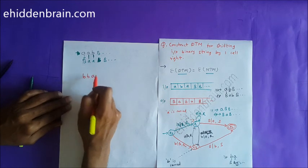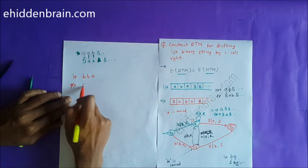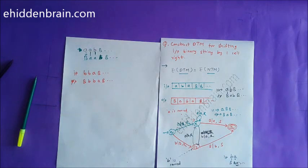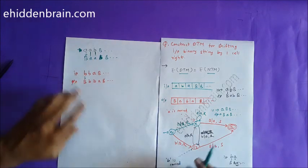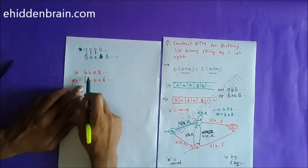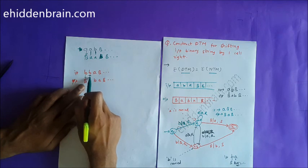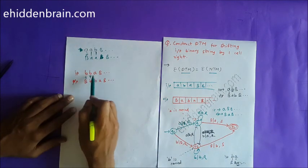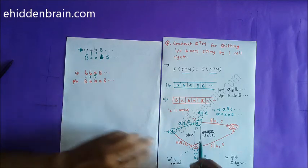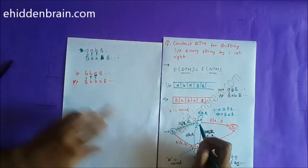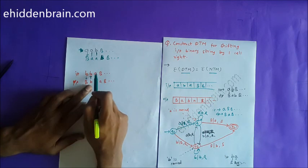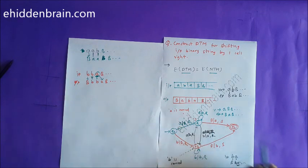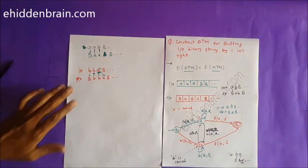For input 'bba', the output should be blank (B), 'b', 'b', 'a'. The first 'b' is replaced by blank (B) at q0, moving to q3. On q3, the next 'b' is replaced by the carried 'b' — we loop on q3. Then 'a' is found and replaced by the carried 'b', moving to q1 carrying 'a'. Finally, blank (B) is replaced by small 'a', reaching the final state q2.